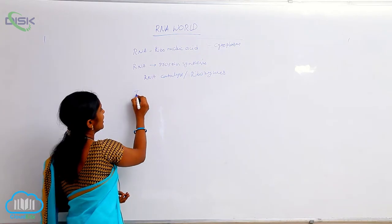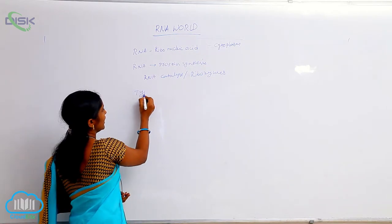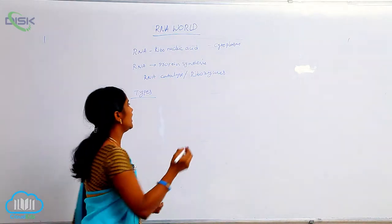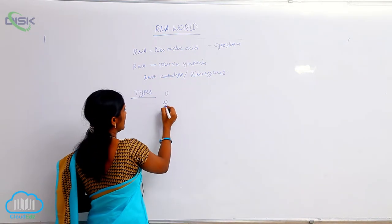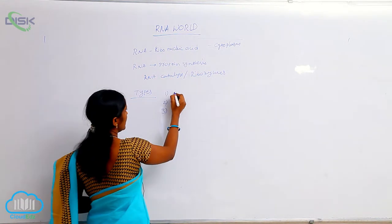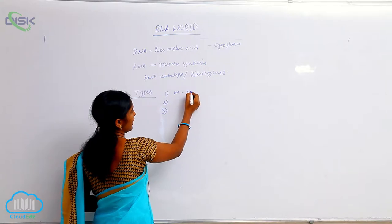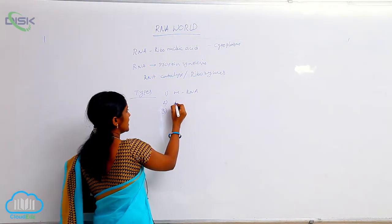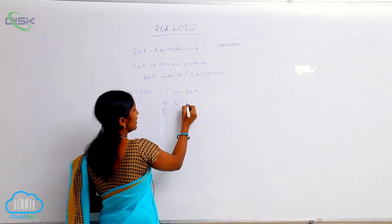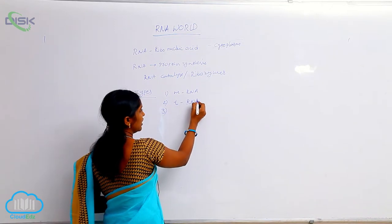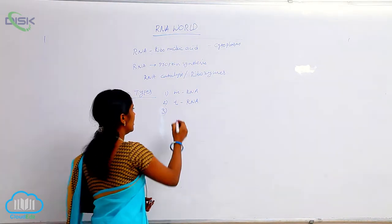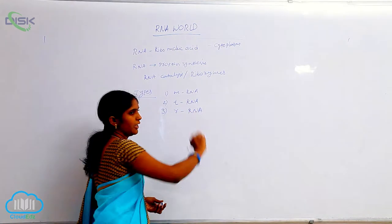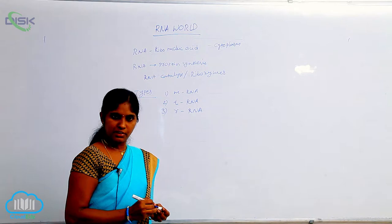So what are the types of RNA? Basically three types of RNAs are present. One is mRNA — messenger RNA. Next is tRNA — transfer RNA. And rRNA — ribosomal RNA. These three types of RNAs are present.